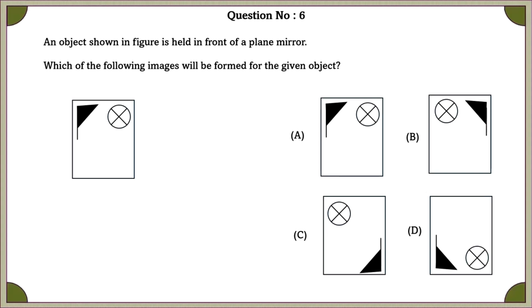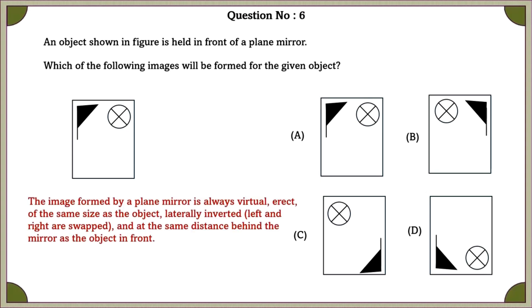Question number 6. An object shown in the figure is held in front of a plane mirror. Which of the following images will be formed for the given image? The image formed by a plane mirror is always virtual, erect, of the same size as the object, laterally inverted, left and right are swapped, and at the same distance behind the mirror as the object in front. So, according to this, our correct option is the B option.